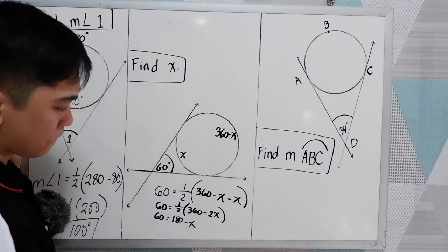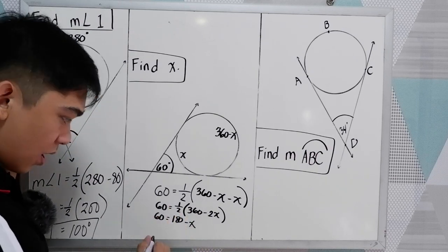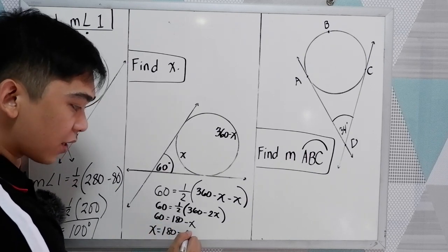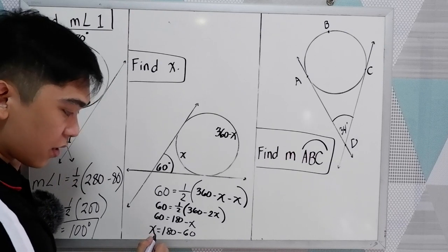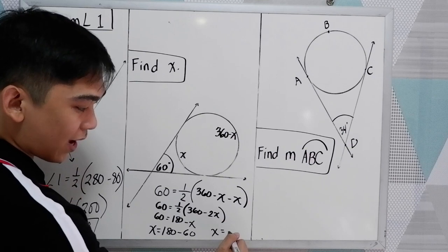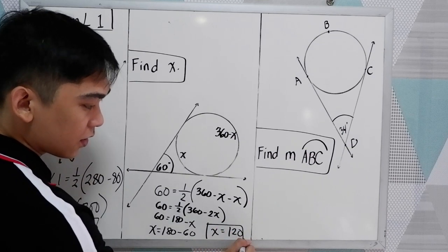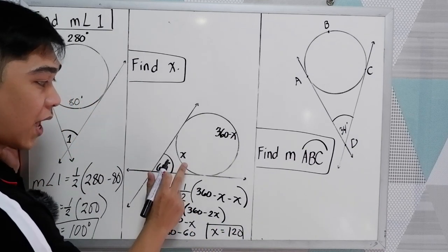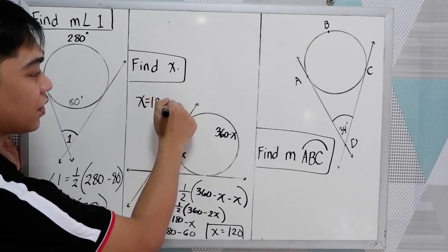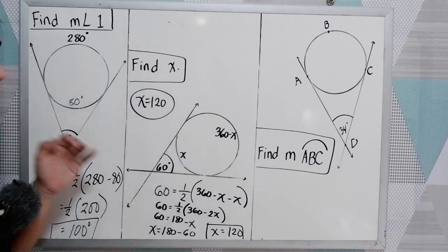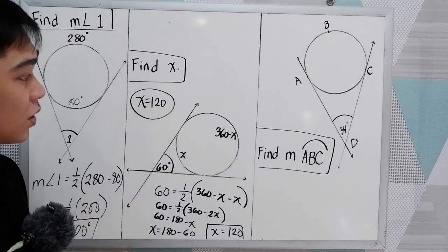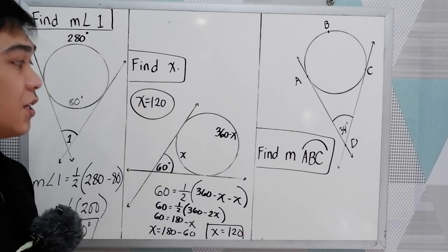So x is equal to 180 minus 60, we have 120. So the value of x here is 120. So x is equal to 120. Now, to get the measure of the bigger arc, so 360 minus 120, that will give you 240 degrees.